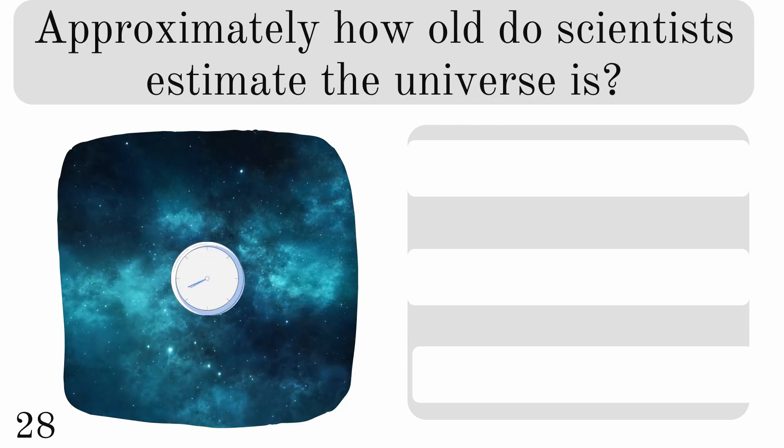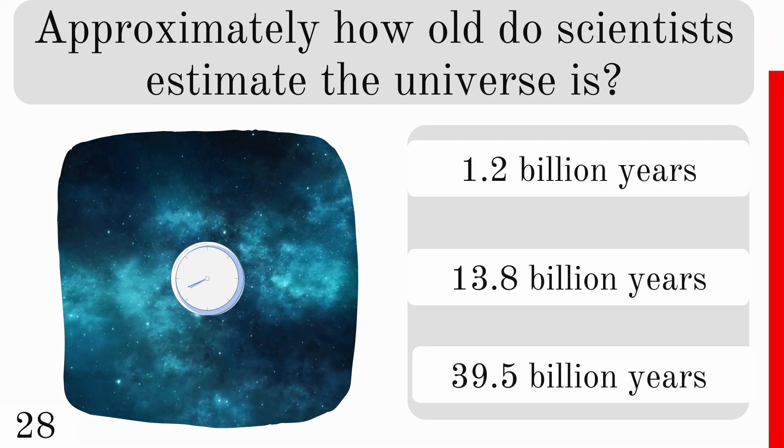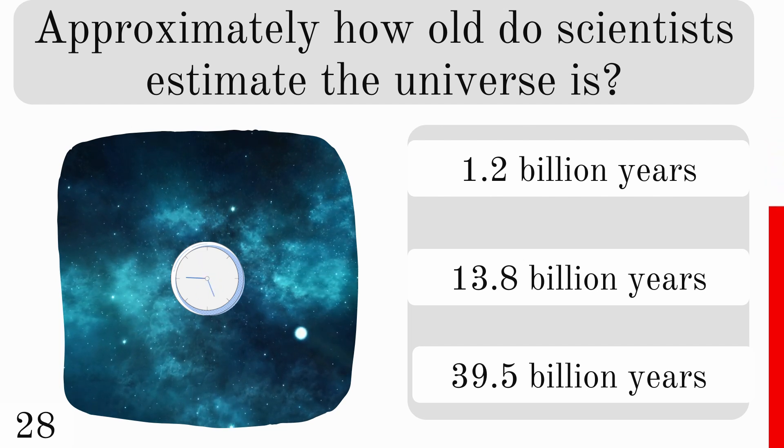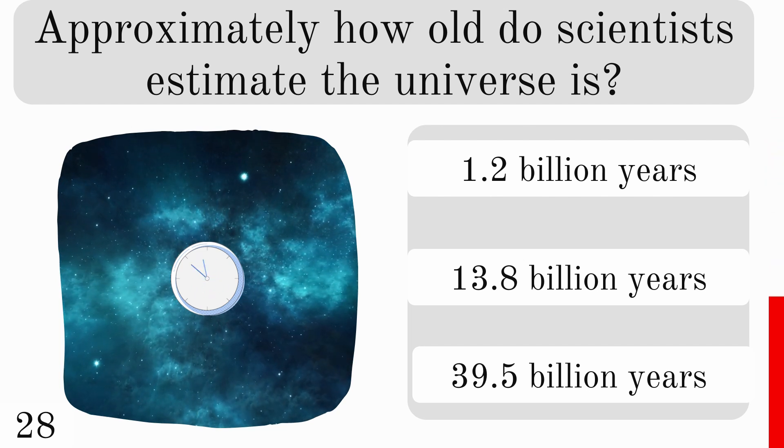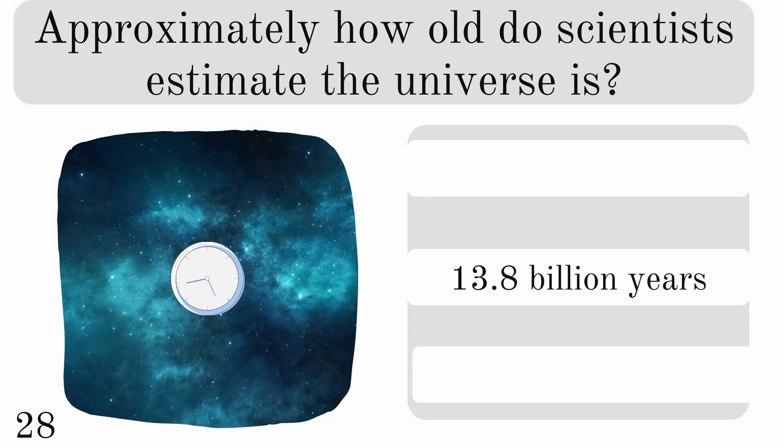Approximately how old do scientists estimate the universe is? 1.2 billion, 13.8 billion, or 39.5 billion years? And the answer is 13.8 billion years.